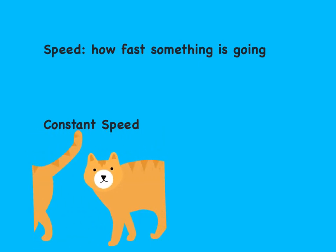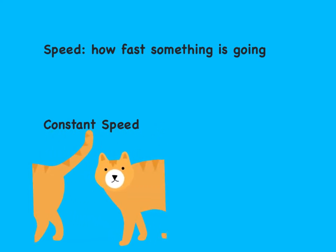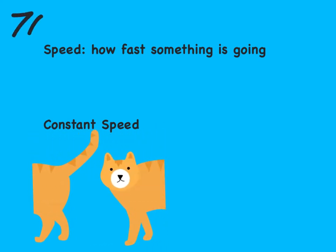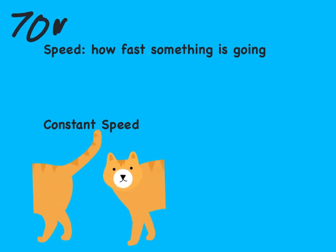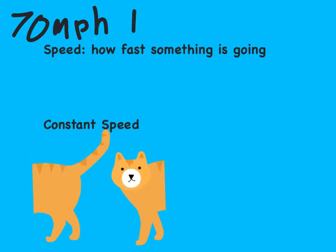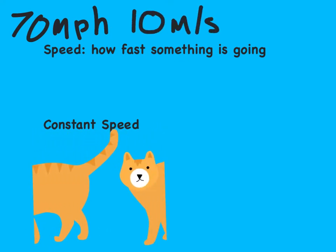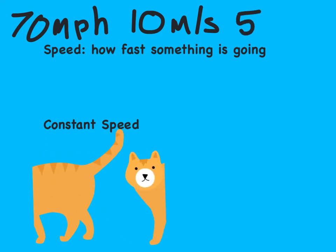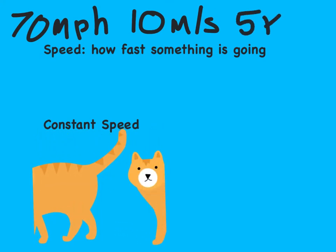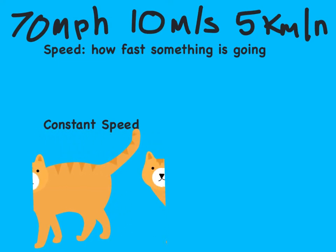There are other examples. Cars — we like to say they travel in miles per hour, so the speed of a car could be 70 miles per hour. We also use meters per second, such as 10 meters per second, or even 5 kilometers an hour.